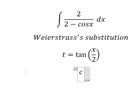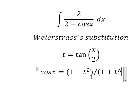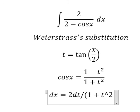So we have cos x equals 1 minus t squared over 1 plus t squared. And the second one, we have dx equals 2 dt over 1 plus t squared.